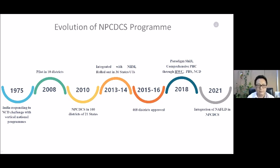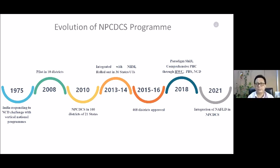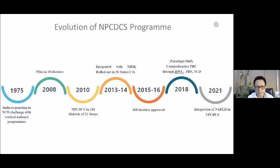We started around 1975 when India started responding to the NCD challenges with some vertical national programs. We tried to pilot that in about 10 districts in 2008, and by 2010 the NPCDCS program was being implemented in about 100 districts across 21 states. Then NHM happened and it was rolled out in 36 states in 2013-14, expanding to about 468 districts in 2015-16. This was followed by a paradigm shift with the introduction of comprehensive primary healthcare through health and wellness centers, and population-based screening for common NCDs happened in 2018.